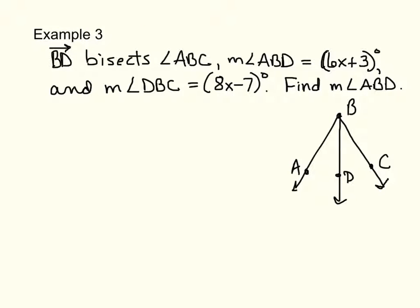Our last example, example number three. Ray BD bisects angle ABC. The measure of angle ABD is 6X plus 3 and the measure of angle DBC is equal to 8X minus 7 degrees. Find the measure of angle ABD. Once again, draw your diagram and label it. Always label. So if I have my picture, we know that ABD, this angle right in here, is 6X plus 3. We know that DBC, which is this angle, is 8X minus 7. So what can you do?